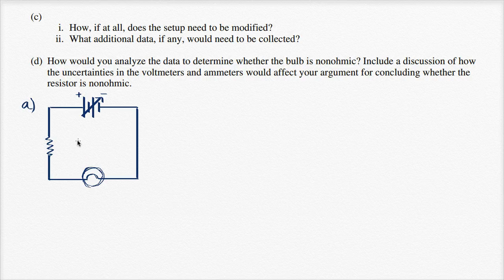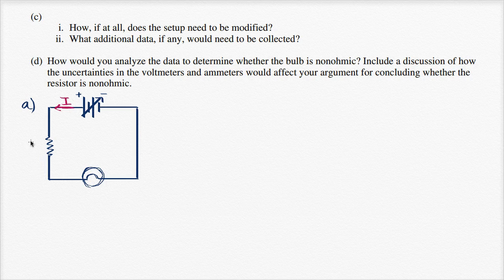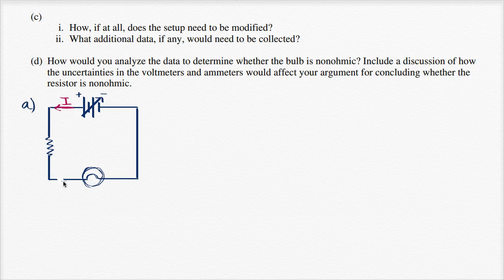Now I want to add ammeters and voltmeters to measure what's happening. The standard convention shows current going from the positive terminal to the negative terminal, but electrons actually travel from the negative terminal to the positive one. To answer question one — whether fewer electrons leave the bulb than enter — we measure the current on either side of the light bulb using ammeters inserted in series.